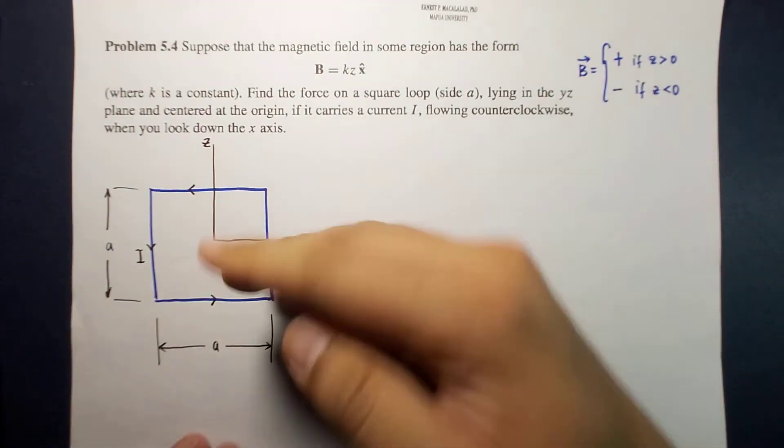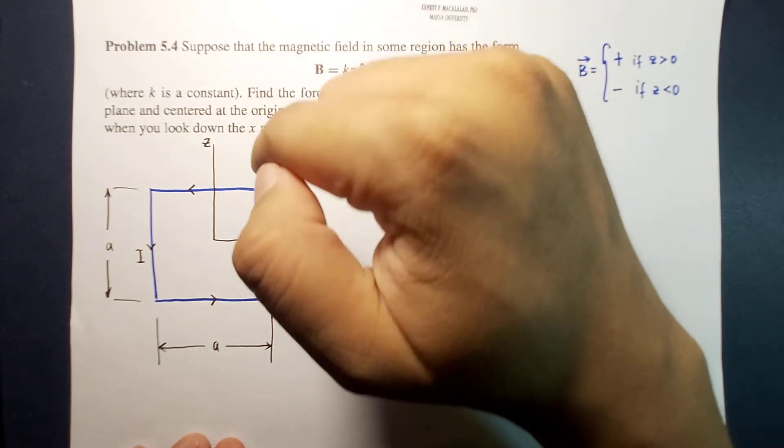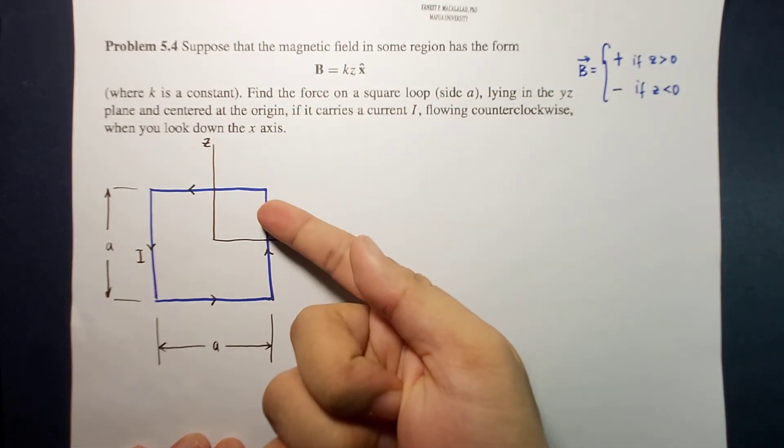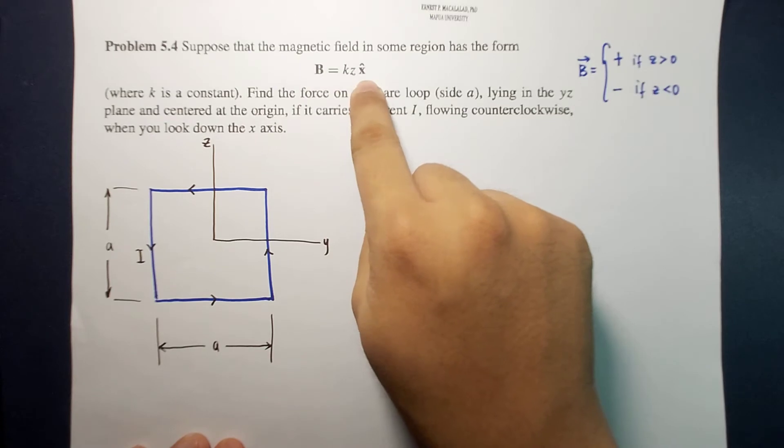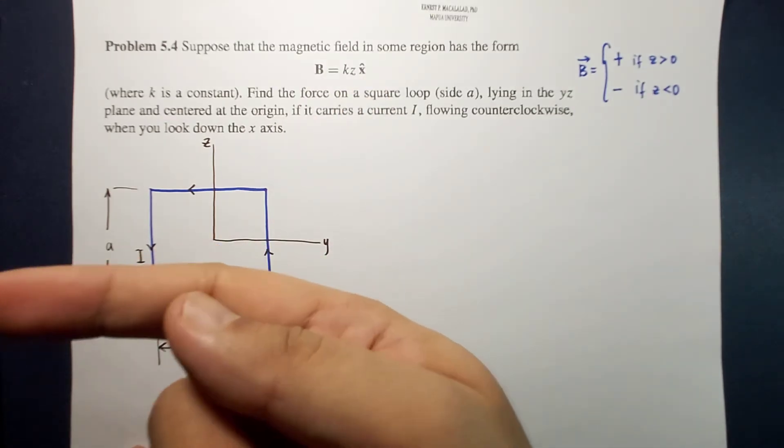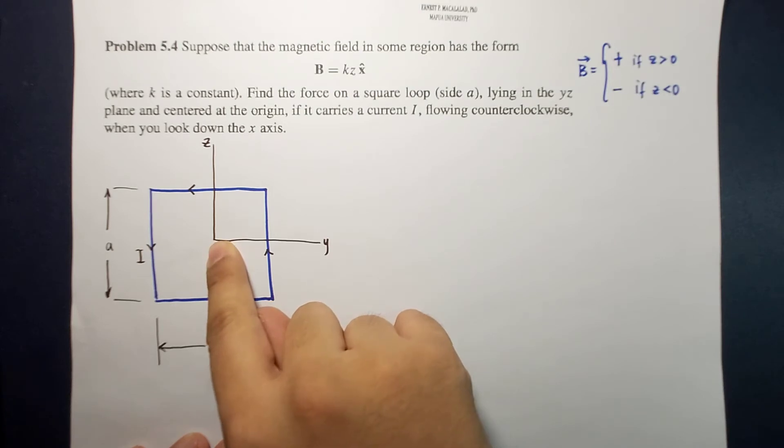So translating that here, anything above the y-axis, the magnetic field is pointing out of the page. Out of the page, because remember our magnetic field is directed either out of the page or into the page, because that is where we set our x direction.